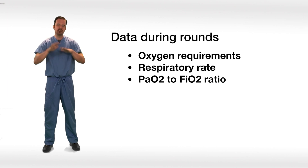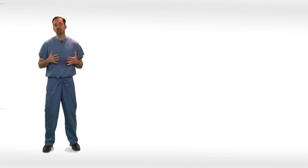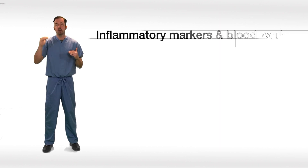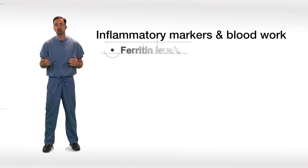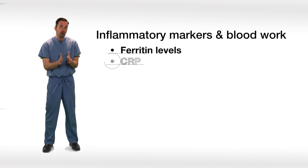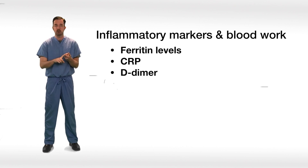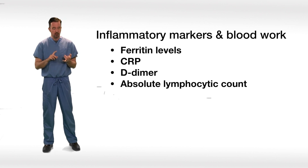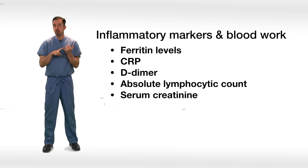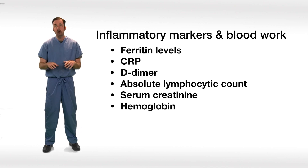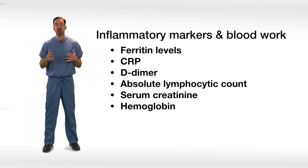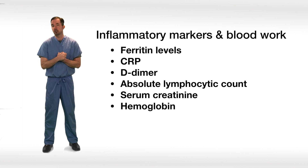After I've looked at their oxygen, I want to get a better idea of their systemic inflammation. We know that as COVID-19 gets worse, inflammatory markers go up, and studies are emerging showing that elevation in inflammatory markers may portend a worse prognosis. Markers I'm watching and ordering every day include ferritin, C-reactive protein (CRP), D-dimer, and the lymphocyte count specifically, because patients with COVID-19 have low absolute lymphocyte counts — and as they improve, those counts improve as well.